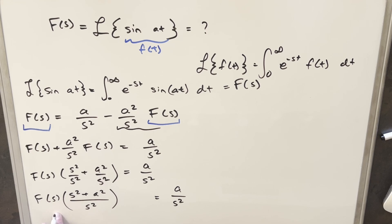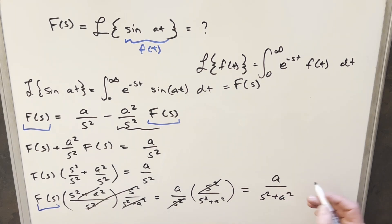Now in order to isolate F of s, let's just multiply by s squared over s squared plus a squared on both sides. Everything's going to cancel out over here on the left side. s squared and s squared is going to cancel over here. And so for our solution for this thing, all we're left with over here is a over s squared plus a squared. And we just need to remember this condition, s greater than zero.